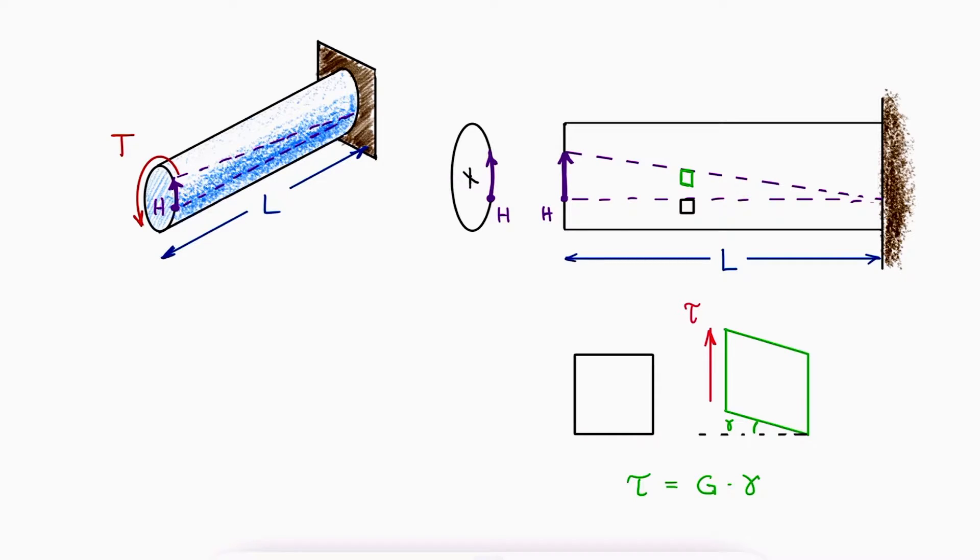Since the arc of the translation of H can be calculated as the radius of the rod times the angle of rotation on that plane, or the angle of twist, phi, just as it can be calculated as the length times the angular strain, gamma, the angle of twist is equal to L gamma over R.